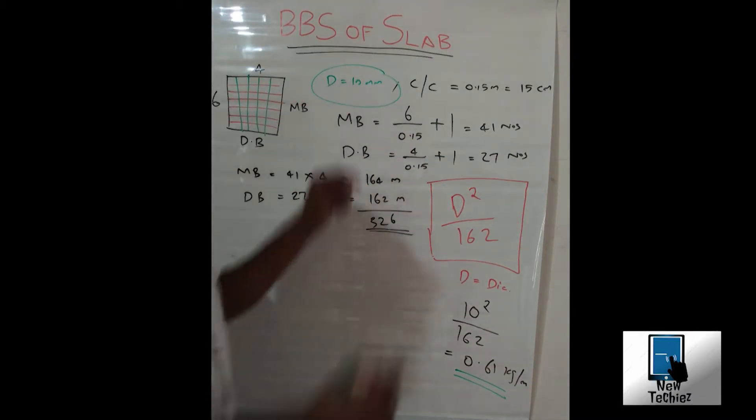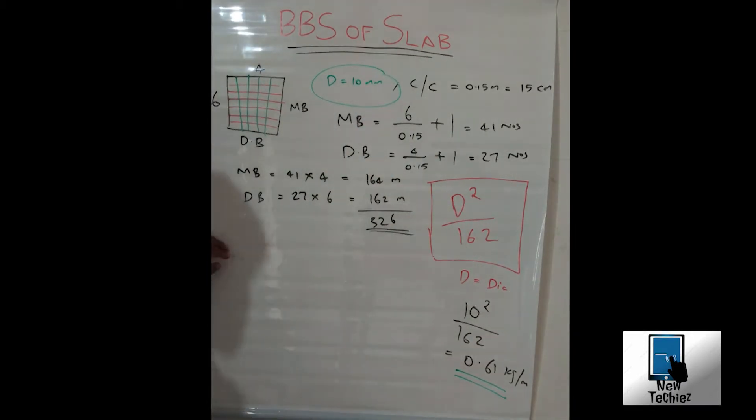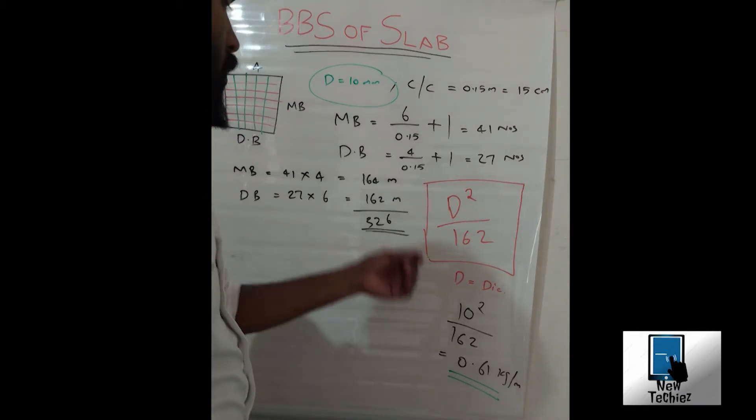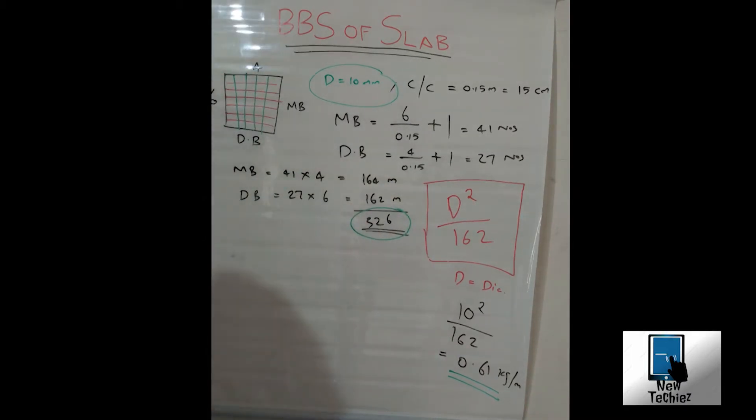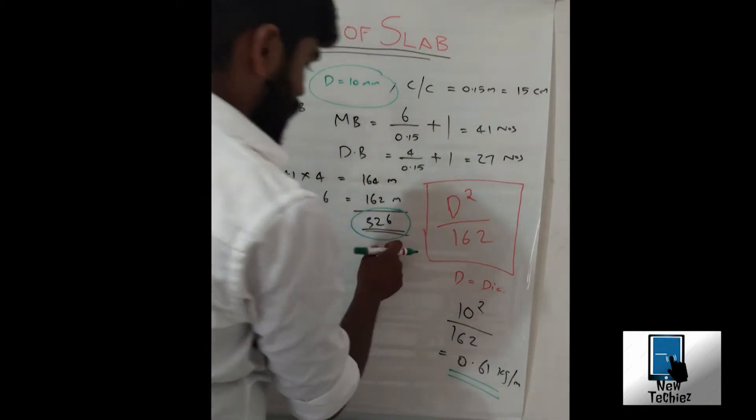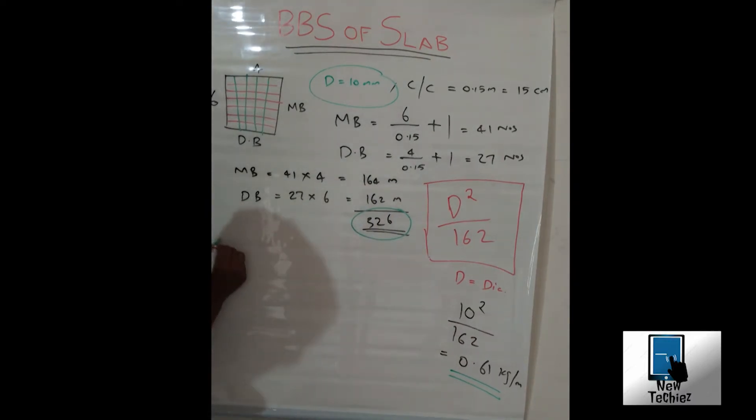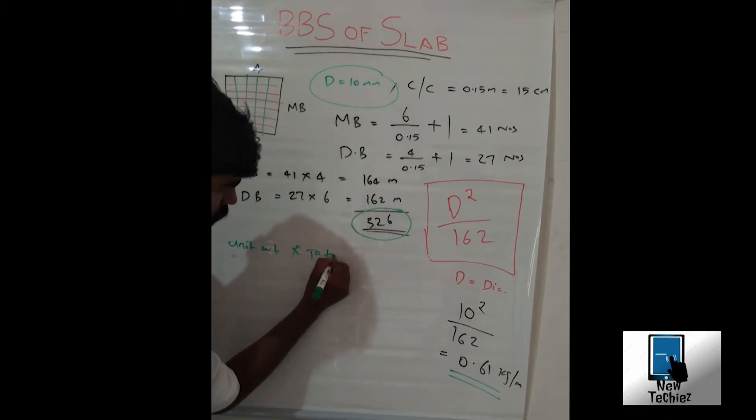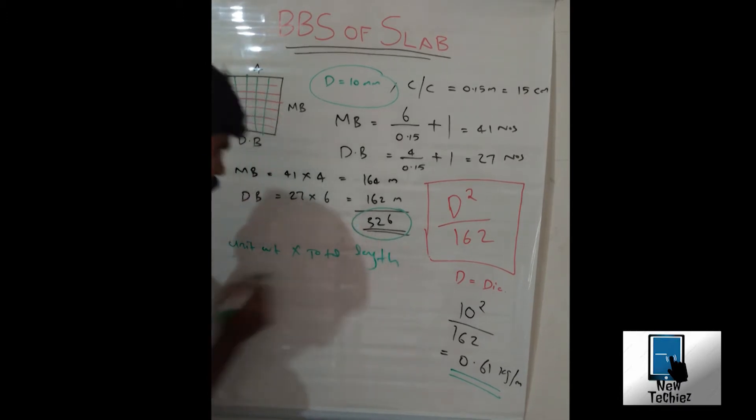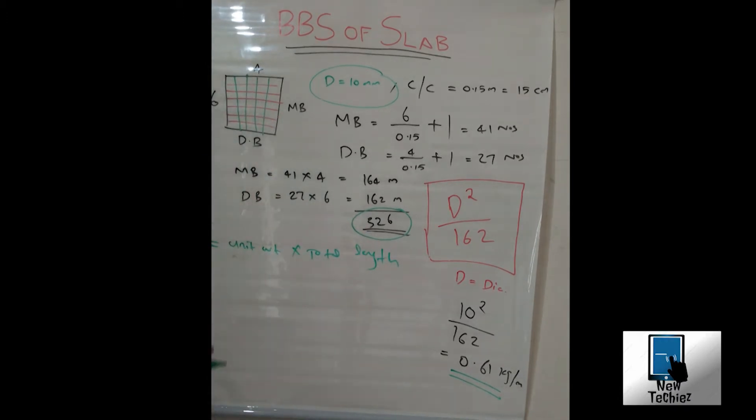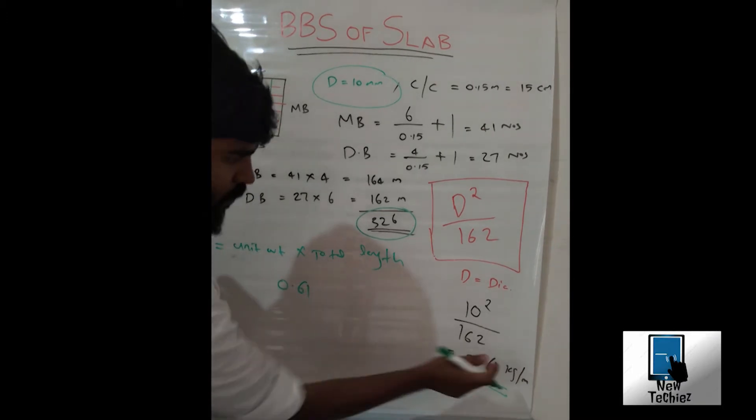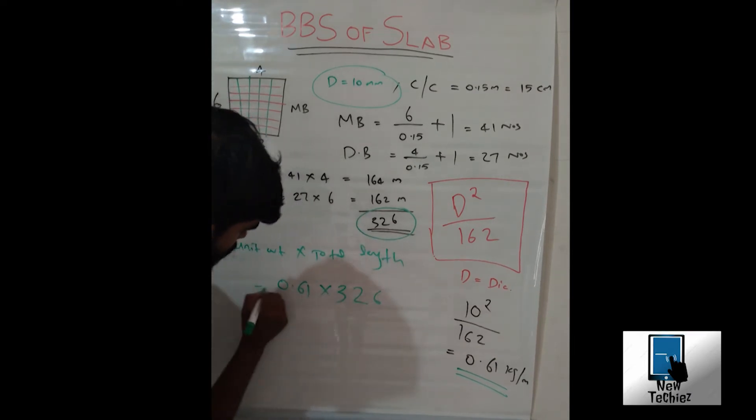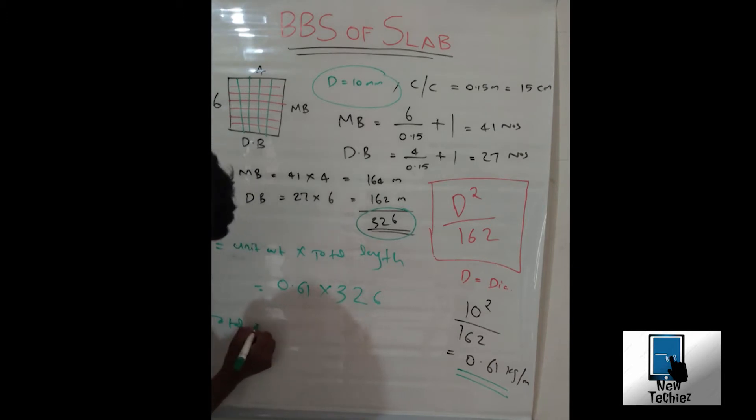We need to check the total kilogram we require. We already got 326 meters. Multiply the unit weight into total length. That is 0.161 into 326, which gives us the total kg, the total length.